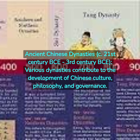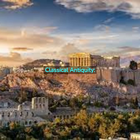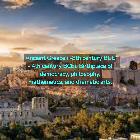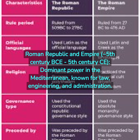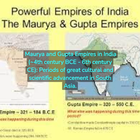Ancient Chinese Dynasties, 21st century B.C.E. to 3rd century B.C.E.: various dynasties contribute to the development of Chinese culture, philosophy, and governance. Classical Antiquity: Ancient Greece, 8th to 4th century B.C.E., birthplace of democracy, philosophy, mathematics, and dramatic arts. Roman Republic and Empire, 5th century B.C.E. to 5th century C.E.: dominant power in the Mediterranean, known for law, engineering, and administration. Maurya and Gupta Empires in India, 4th century B.C.E. to 6th century C.E.: periods of great cultural and scientific advancement in South Asia.